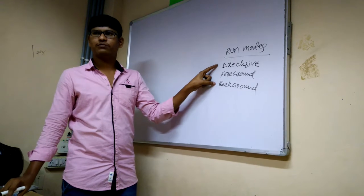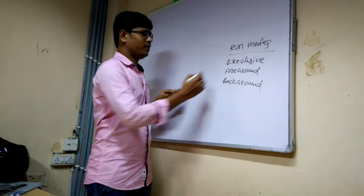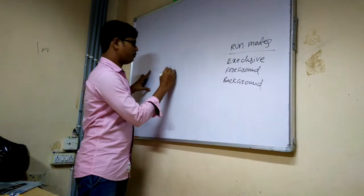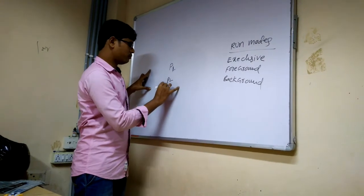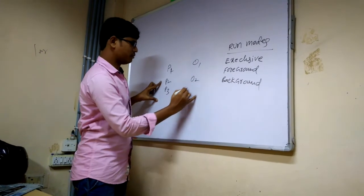So what is exclusive? Exclusive means I'm having processes - process 1, process 2, process 3. So I'm having objects, different objects.